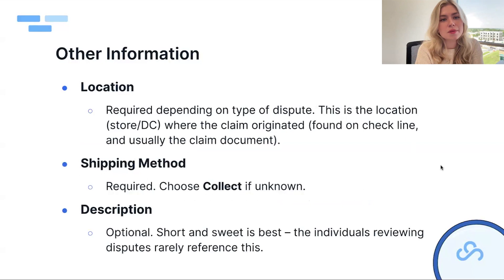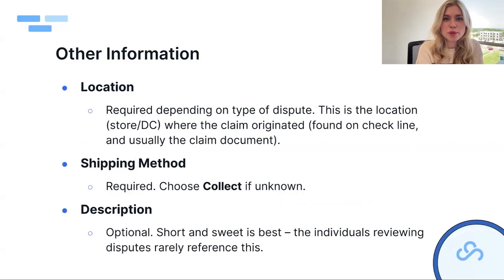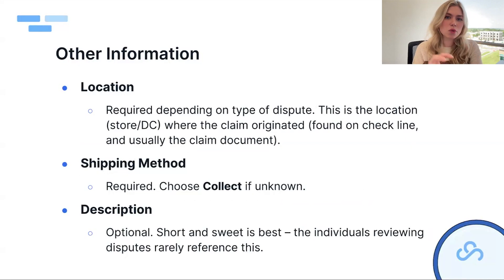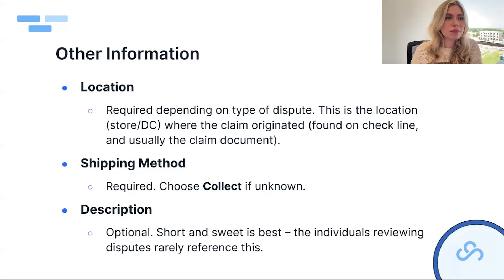Location is required depending on the type of dispute — it's the location of the store or DC where the claim originated, found on the check line and claim document. Shipping method — collect versus prepaid; if you're unsure, choose collect. Description is optional and rarely read by the reviewers, so keep it short and sweet if you include it at all.